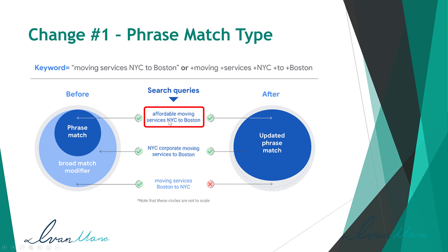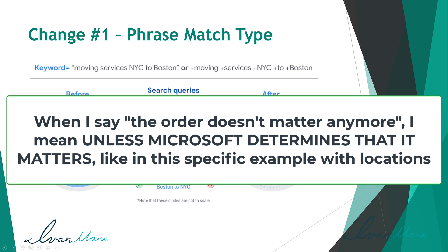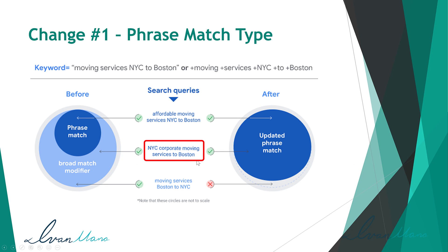Now with the updated phrase match — which basically removes the need for broad match modifier — let's go through those search queries again. For 'affordable moving services NYC to Boston,' all the words are in the search term, so your ads will show up. For 'NYC corporate moving services to Boston,' before this would not have shown under phrase match because the order differed, but with the updated phrase match the order doesn't matter anymore. So with the change, that search term will trigger your ad because every single one of those words is present, and NYC still comes before Boston.